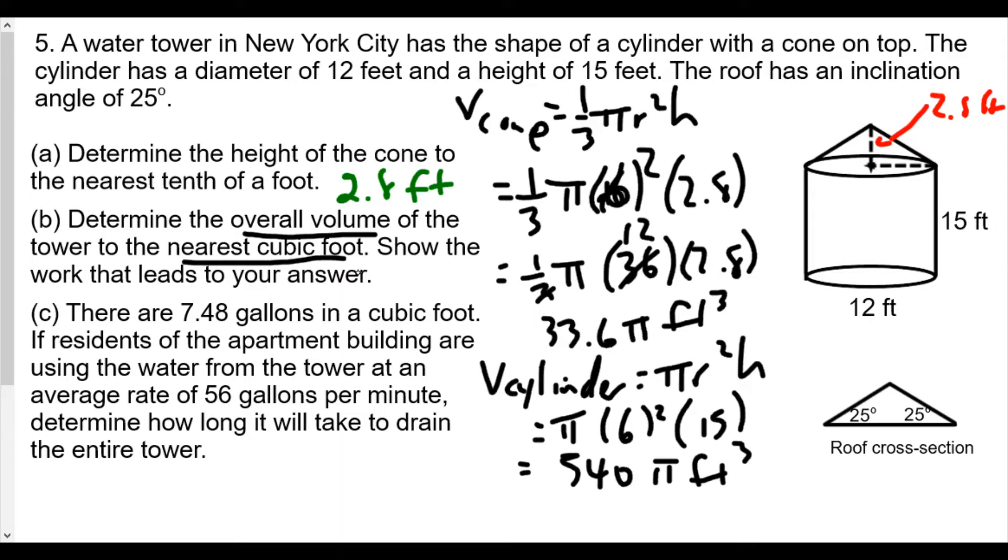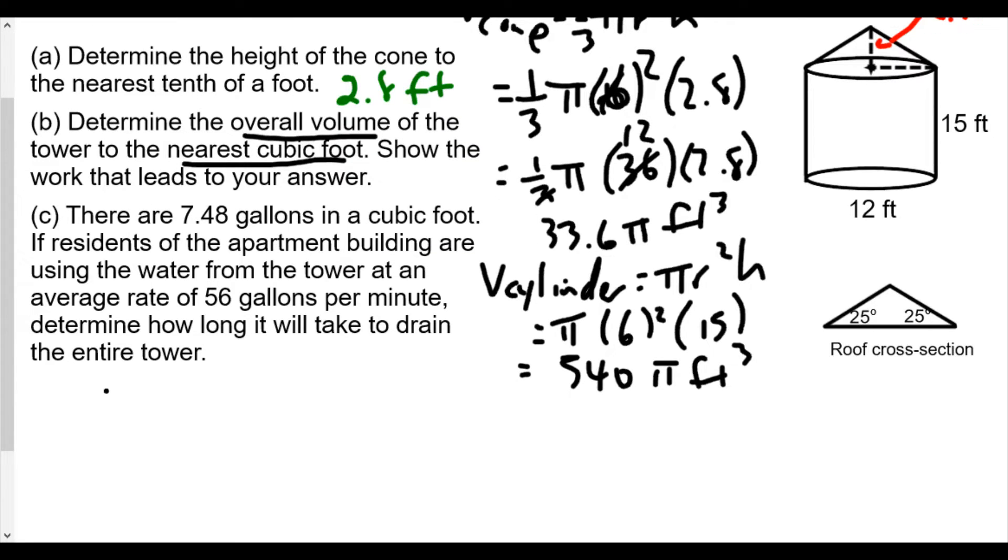The total volume—because we're looking for the total overall volume to the nearest cubic foot—we're going to take the total volume equals 33.6π plus 540π, which is 573.6π.